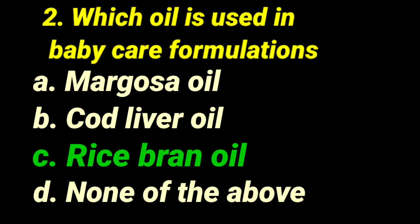Second question: which oil is used in baby care formulations? Margosa oil (neem oil) is used externally but not exactly for baby care formulations. Cod liver oil is also used externally for the preparation of some emulsions but not in baby care formulations. The exact correct answer is rice bran oil, used for the preparation of baby care formulations like baby shampoo, baby oil, and baby soaps. Rice bran oil is a fixed oil obtained from the cuticle present between the rice and paddy using a solvent extraction process.